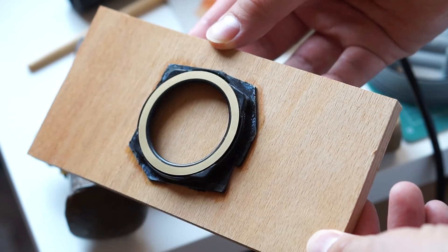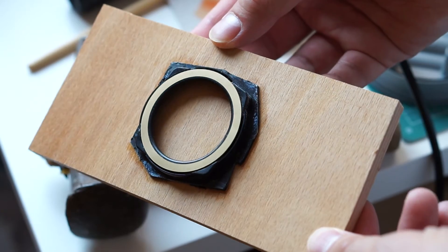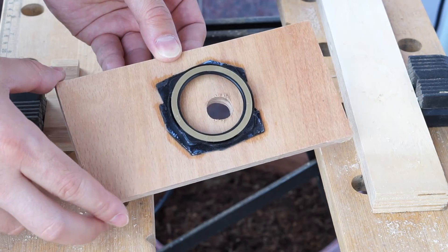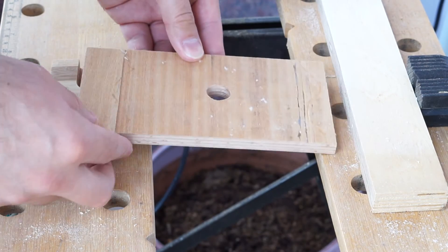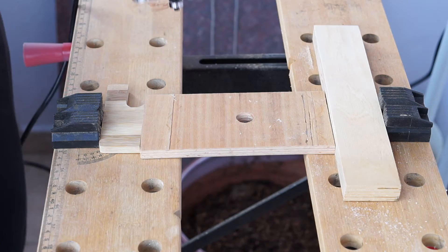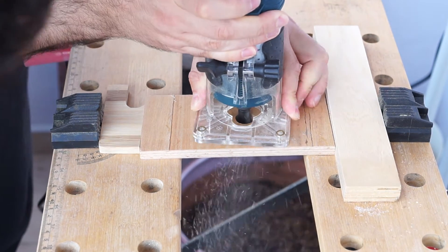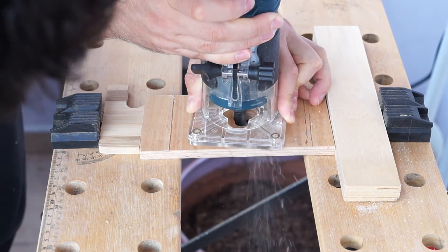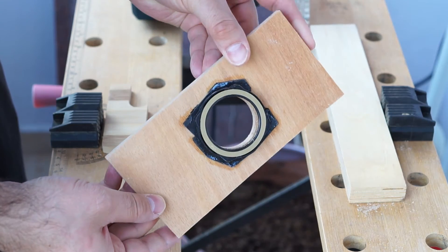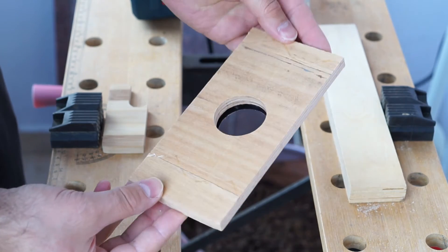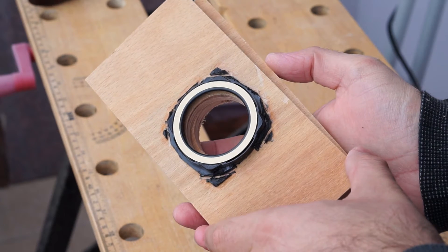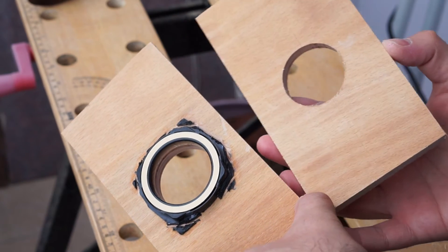So my goal with this step was to use my router and a flush trim bit to make an exact copy of this circular opening. So I fired up the router, cut the hole in the piece of plywood, and then I realized that the glue had stuck the plastic to the plywood too well and I couldn't separate them. That's why I made a copy of the cutout into another piece of plywood.